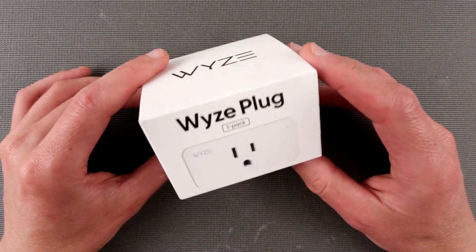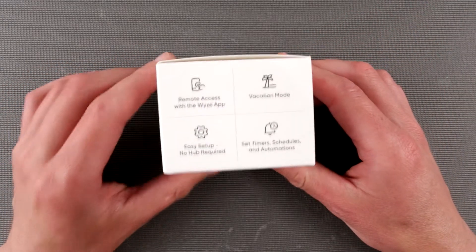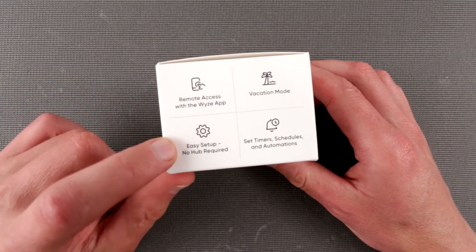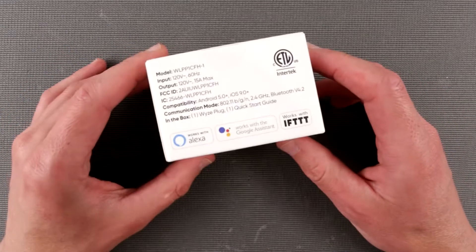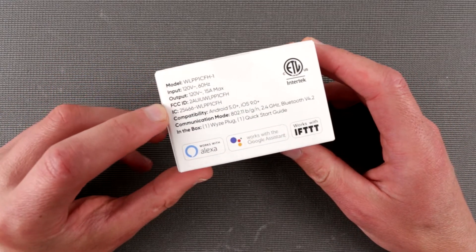So what is it? Obviously it's a smart plug. What can it do? Remote access, easy setup, location modes, timers. What are the specs? This is the model number.